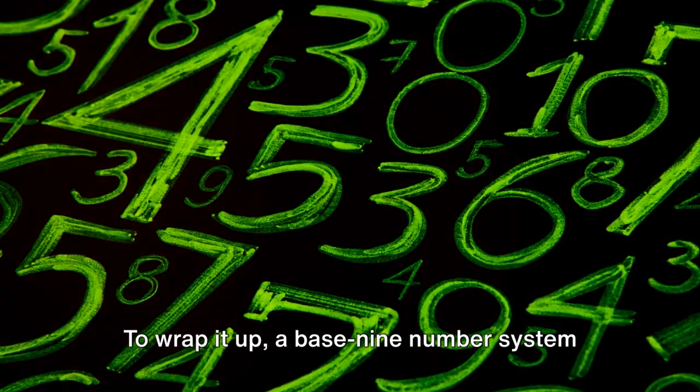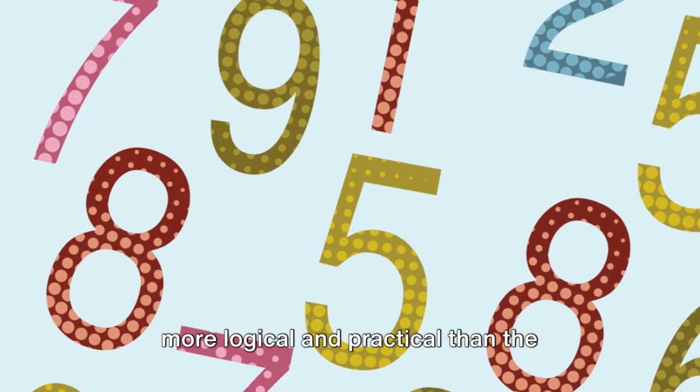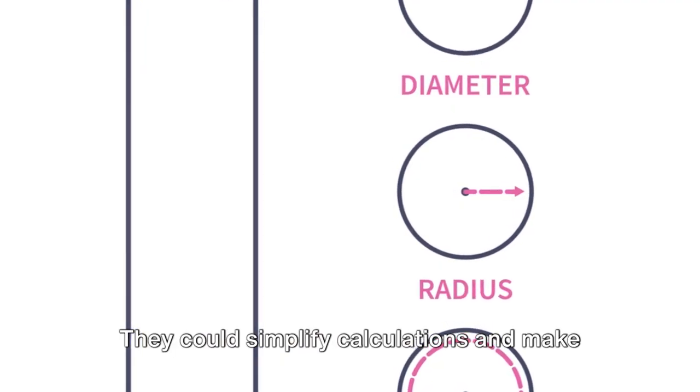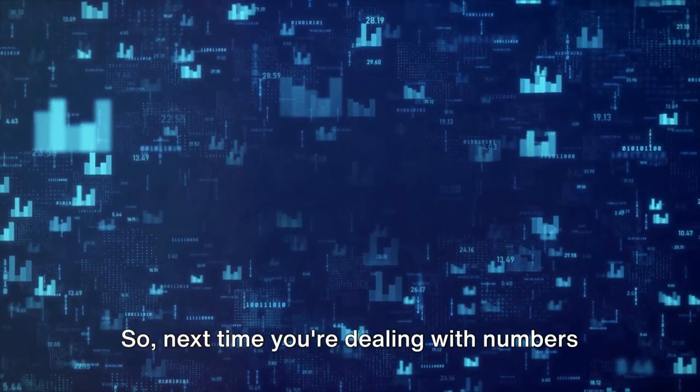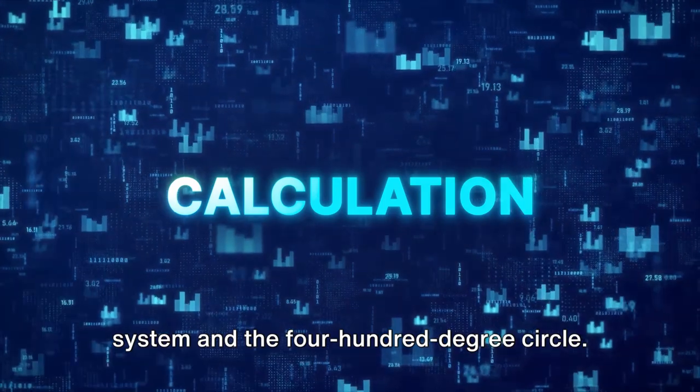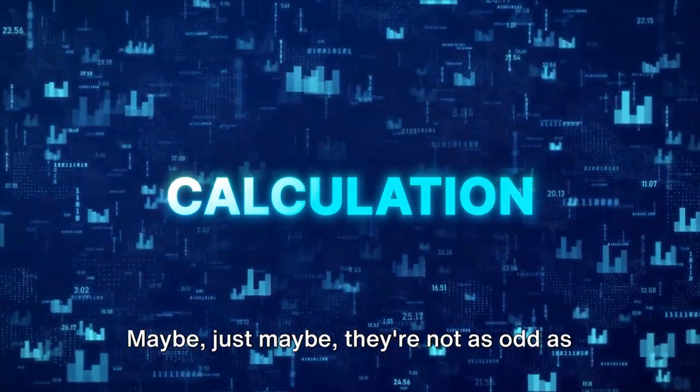To wrap it up, a base 9 number system and a 400-degree circle could be more logical and practical than the current systems. They could simplify calculations and make them more intuitive. So next time you're dealing with numbers or angles, spare a thought for the nonary system and the 400-degree circle. Maybe, just maybe, they're not as odd as they first seem.